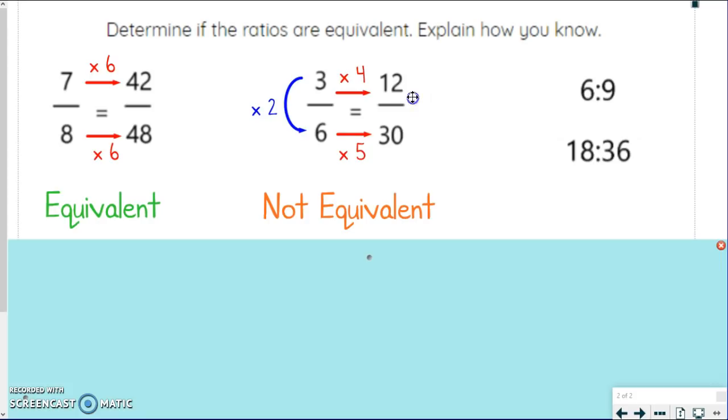But over here, I would actually need to take 12 times 2.5, right? Because half of 12 would be 6. So I would do 12 times 2 and then add that 6 into it. And that's how I'd get to 30. But that's not multiplying by the same thing on both sides. Times 2 over here versus times 2.5. So you can explain that either way using the cross relationship or the up and down relationship. Your choice. But they are not equivalent. Let's look at one more.